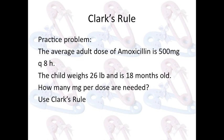Here's a practice problem. The average adult dose of amoxicillin is 500 milligrams every eight hours. The child weighs 26 pounds and is 18 months old. How many milligrams per dose are needed? Use Clark's Rule to solve this problem.